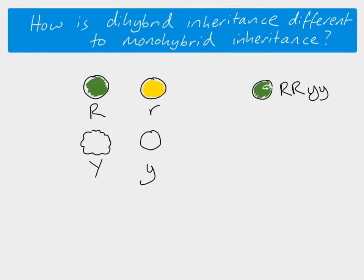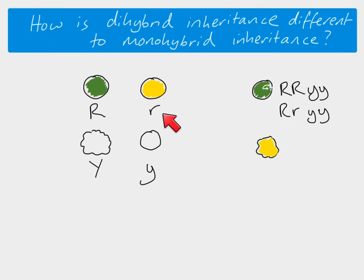Because we only need one copy of the dominant allele, it could also have this genotype. And then if we take another example — a wrinkly yellow pea — wrinkly is the dominant allele, so it has to have at least one copy of the big Y. And the yellow colour is recessive, so it has to have two copies of the recessive allele, small r. So that means we could have this genotype or we could have this genotype.